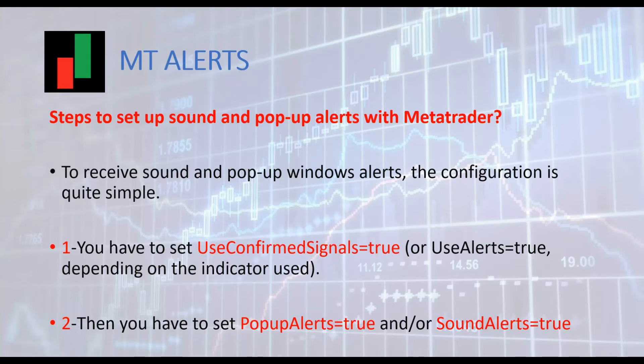Let's start with pop-up and sound alerts — they are quite simple. To have alerts working, you must set 'use confirmed signals' to true. Then you have to enable the type of alerts you wish to use — for instance, pop-up alerts to true, or sound alerts to true, depending on your own criteria.